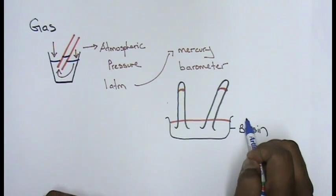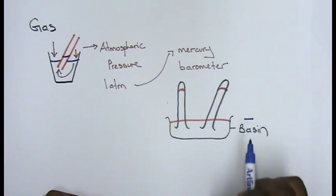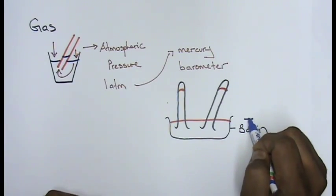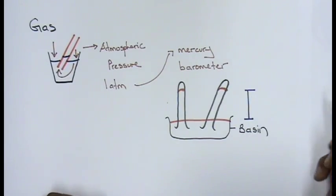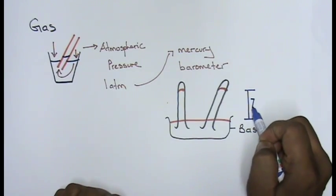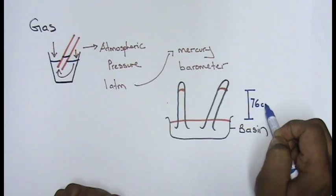the mercury, from the surface of mercury at the basin all the way to its height over here, it gives us a value of 76 centimeter.